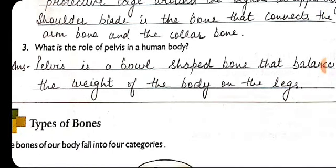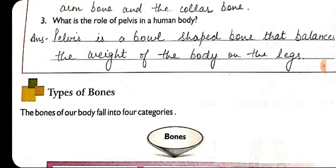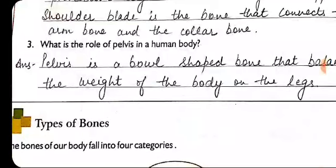The next question is: what is the role played by the pelvis in the human body? The pelvis is a bowl-shaped bone which balances the total weight of our upper body over our legs.